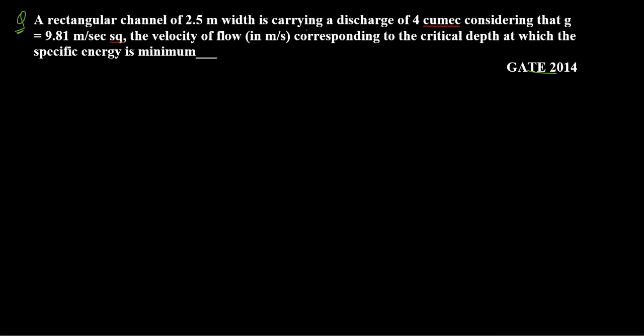A rectangular channel of 2.5 meter width is carrying a discharge of 4 m³/s, considering that G is equal to 9.81. We need to find the velocity of flow corresponding to the critical depth at which specific energy is minimum. So what we have to calculate here is: when we have critical depth or minimum specific energy, we have to calculate the velocity of flow.